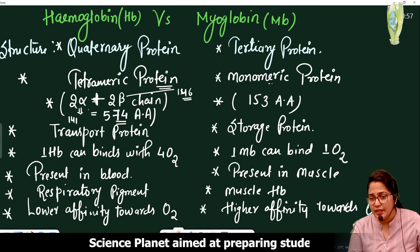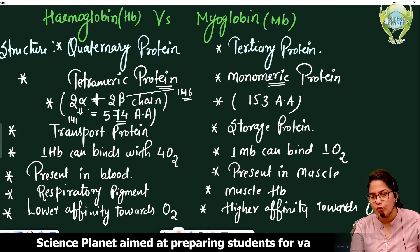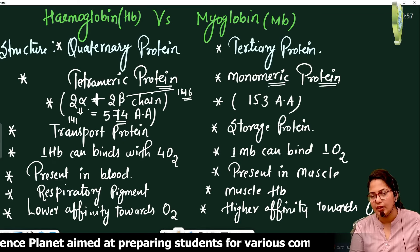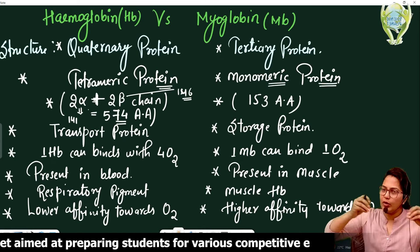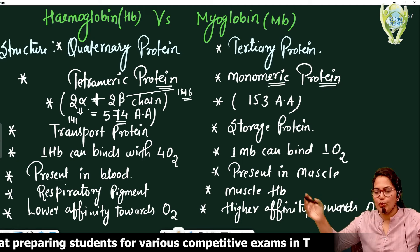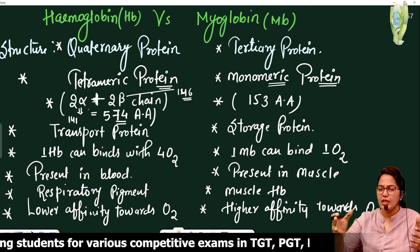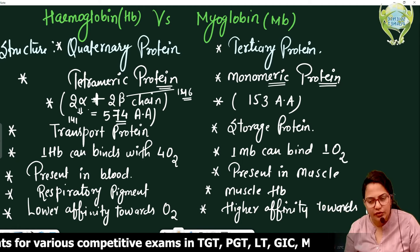Myoglobin, however, is a monomeric protein, meaning it is a single polypeptide chain. It contains 153 amino acids.